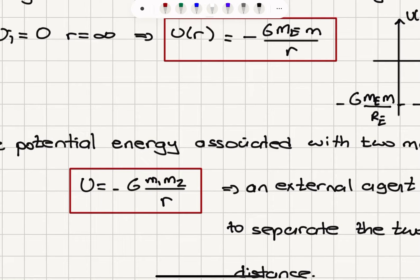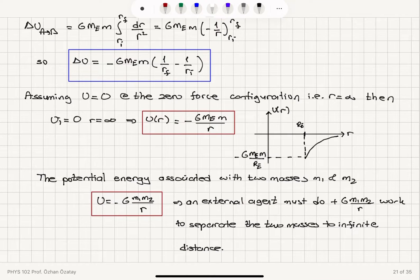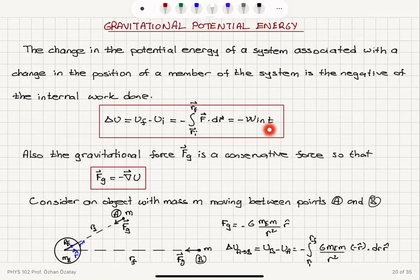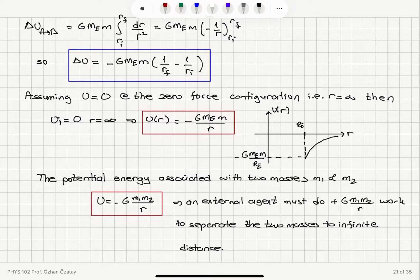If one of the objects is Earth, it would be minus G M_e m2 over r. An external agent must do plus G m1 m2 over r work to separate the two masses to infinite separation. The change in potential energy equals the work done by the external force, so we have to supply an energy of plus G m1 m2 over r with an external force to separate the two masses to infinite distance.